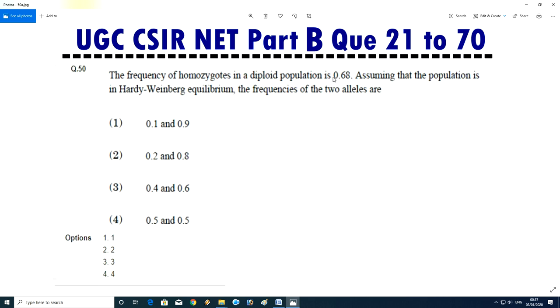Last question - The frequency of homozygosity in the diploid population is 0.68. Assuming that population is in Hardy-Weinberg equilibrium, the frequency of the two alleles are. So it will be second, 0.2 and 0.8.